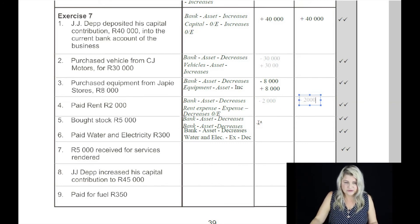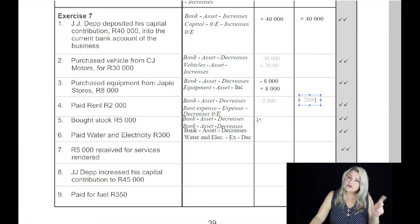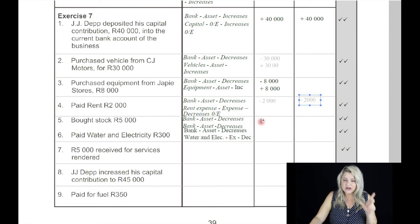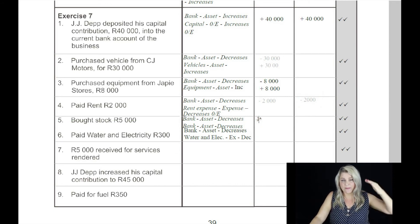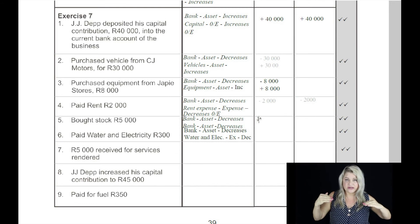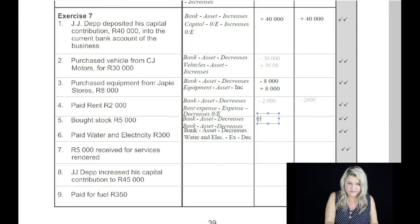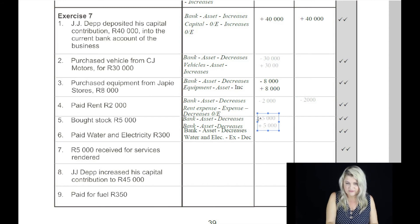Now the fifth: bought stock, 5,000 Rand. Stock is called trading inventory. So the two accounts affected are bank and trading inventory — both of them are assets. One is being decreased, the other one's being increased. We're paying for something, so bank is decreased and trading inventory will increase. So we say minus 5,000 Rand for the bank and increase the other asset by the same value of 5,000 Rand.